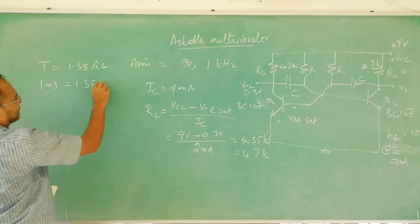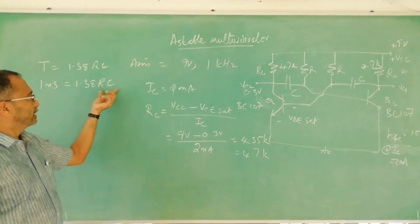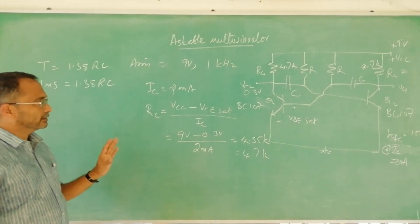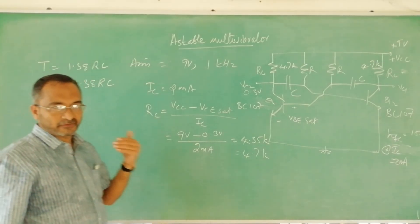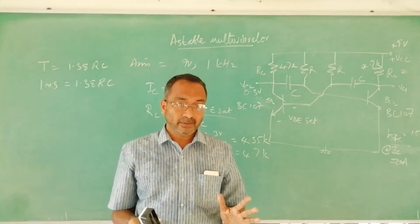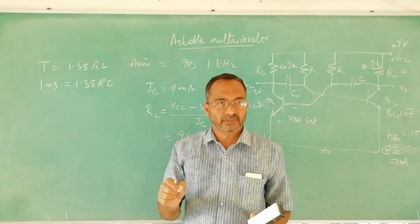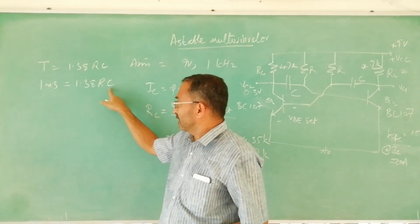So there are two unknown parameters R and C. What should we select? There is a wrong notion that people think that C should be selected first because the availability of standard values are less in number. This is wrong.